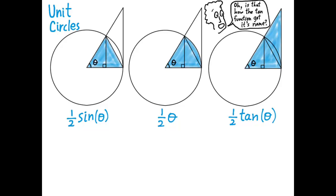So we have three areas, and we can see that the first region is contained entirely within the second region, and the second region is contained entirely within the third region. That means we can set up an inequality: one-half sine of theta is less than or equal to one-half theta, which is less than or equal to one-half tangent of theta.